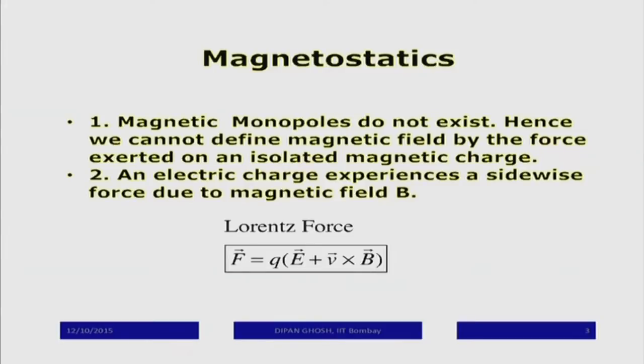The electric charge experiences a sidewise force in the magnetic field. If there is a combination of electric and magnetic fields, the force is given by the Lorentz force expression: q times E plus q times v×B. The magnetic field exerts a force perpendicular to the direction of v and B. If the velocity direction has only a component along the direction of the magnetic field, the force is zero.